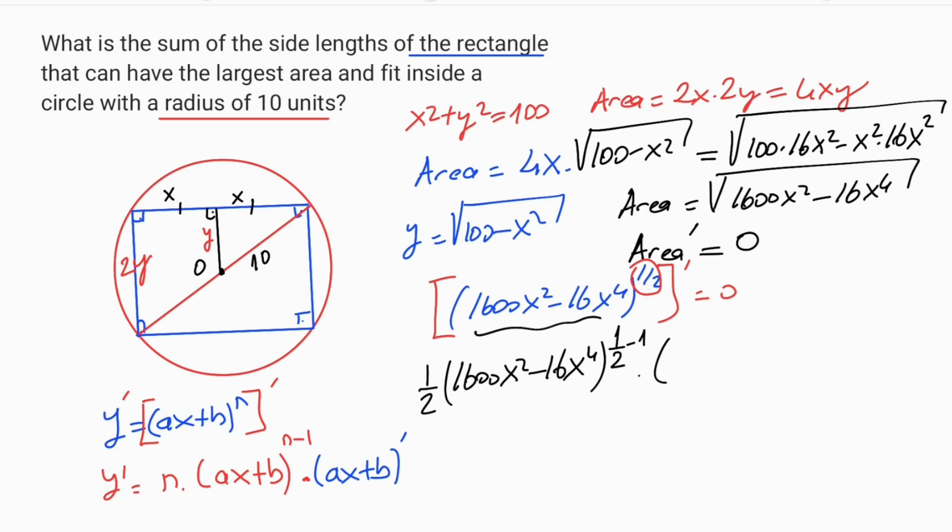Times the derivative of this expression, so 3200x minus 64x squared equals 0.